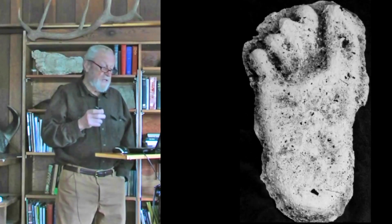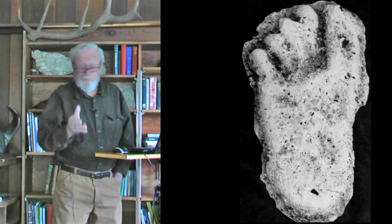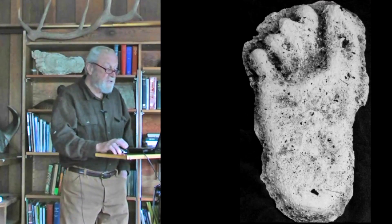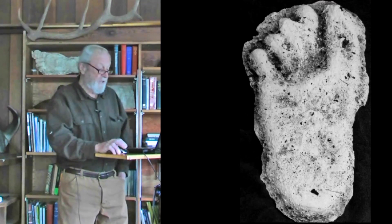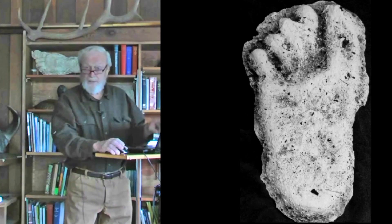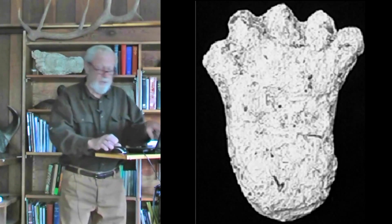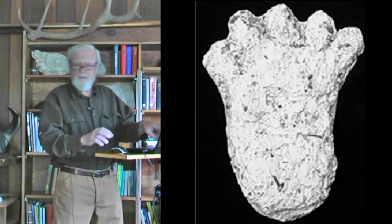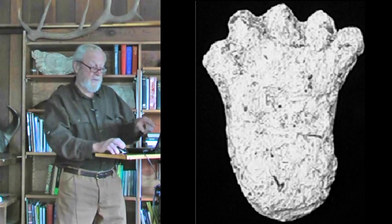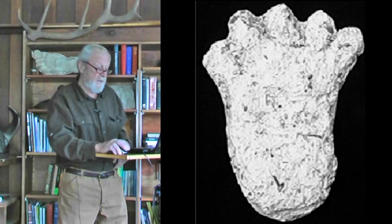One quite consistent feature of Sasquatch tracks is that they tend to be broad — wide compared to their length — broader than the human foot or human tracks. This is quite an extreme example from Pennsylvania, where the width of the foot behind the toes is fully 50% of its length. Similarly, in this rather small Sasquatch track, only eight inches in length, the width behind the toes is also fully 50% of the length.